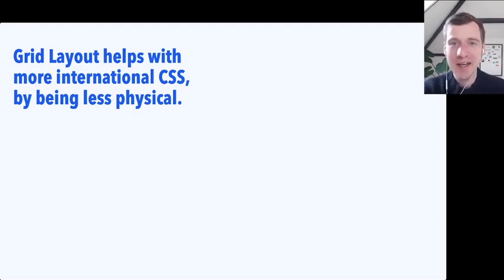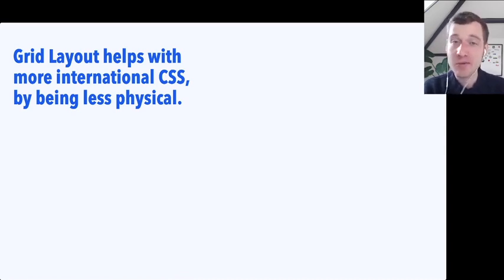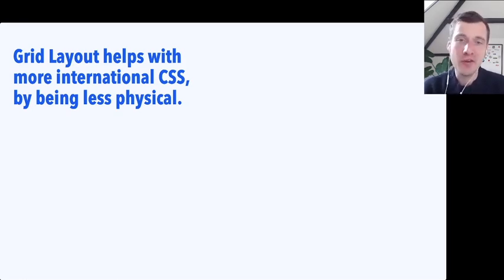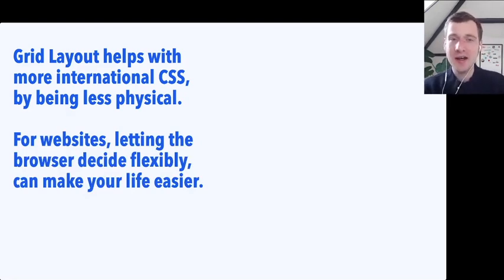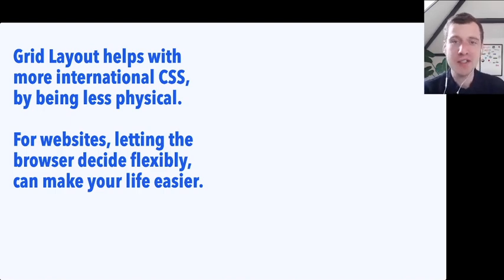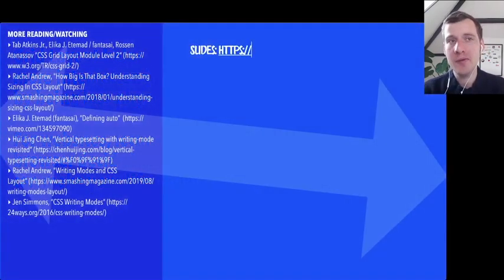Two takeaways: grid layout really helps with more international CSS by being less physical — you are able to write the same CSS for different types of languages and different writing modes, something that print designers never had. And for websites, letting the browser decide flexibly can really make your life a lot easier. Rather than defining all of the different sizes, sometimes it might be better to use flexible units so that when a content editor adds a really long word, the word is still readable and automatically dealt with. Or maybe you want to override the default settings.